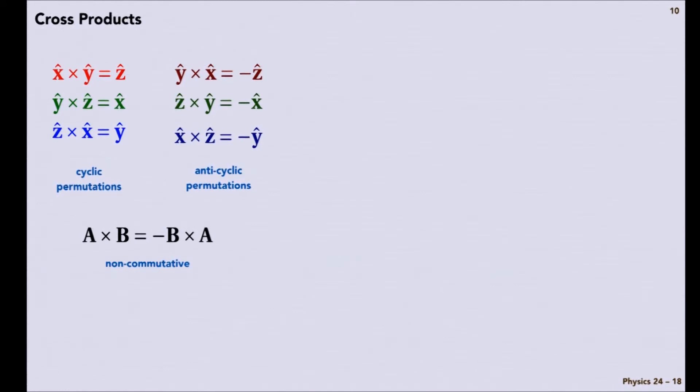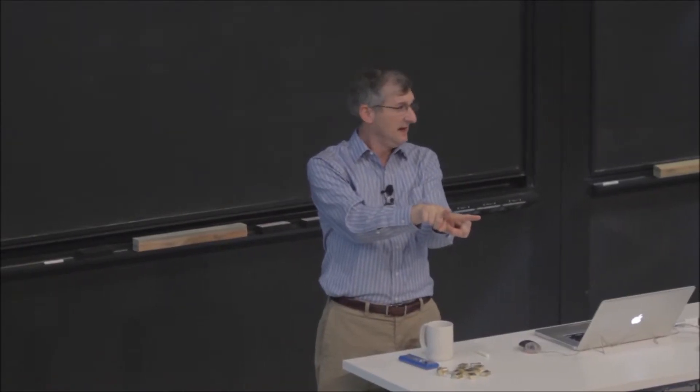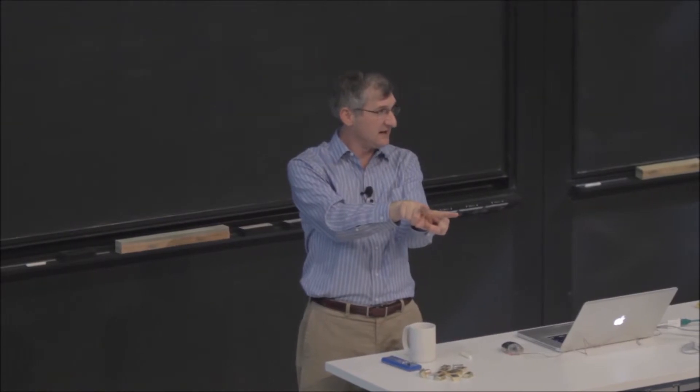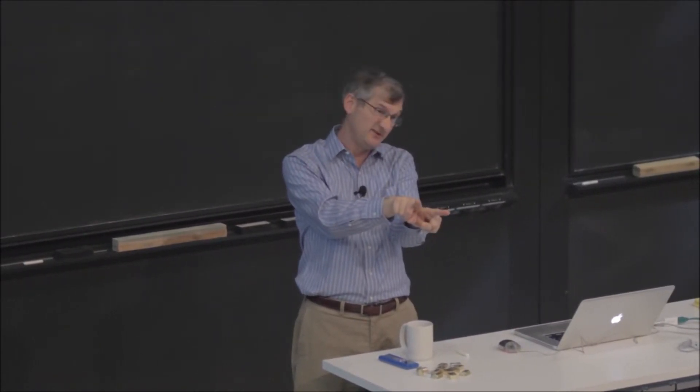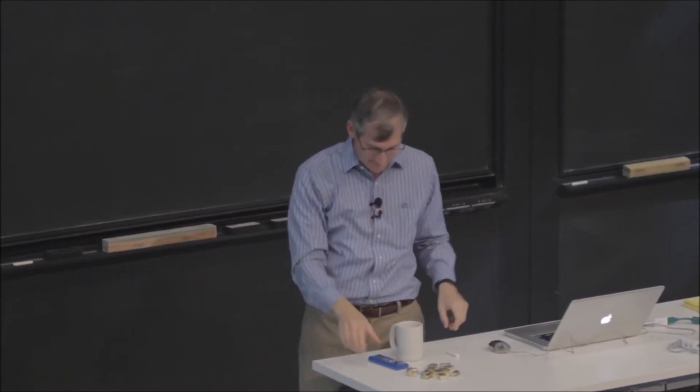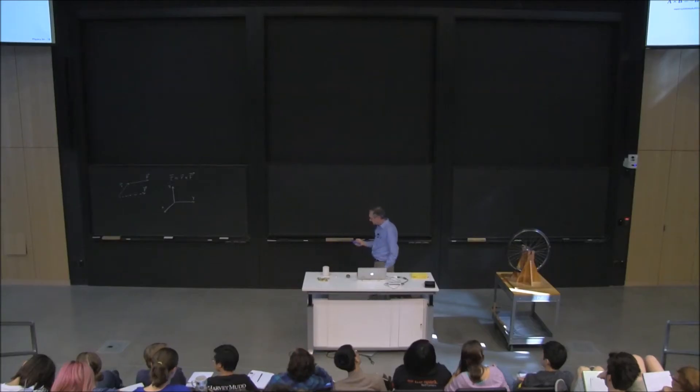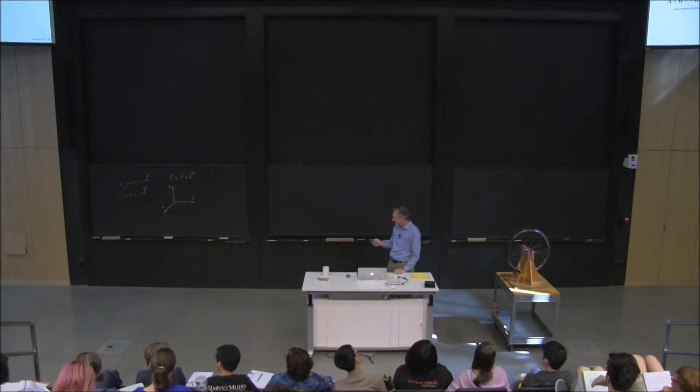And the vectors A and B in general define a plane. And the direction of the cross product vector is perpendicular to that plane. And so it's actually very useful for figuring out planes, not like Boeing.